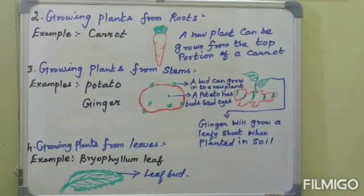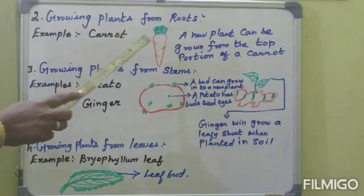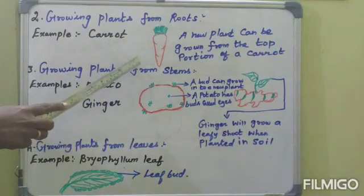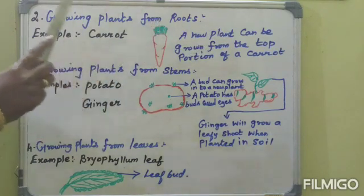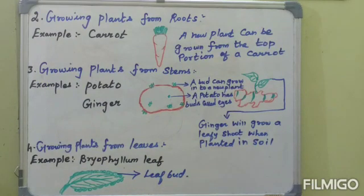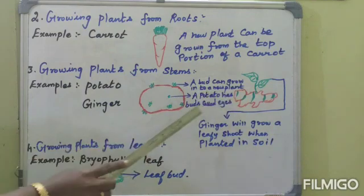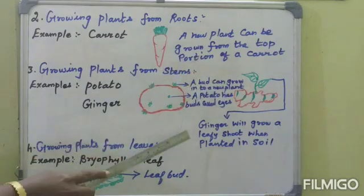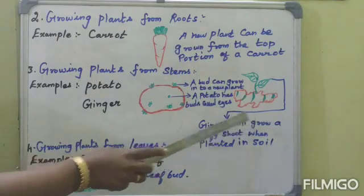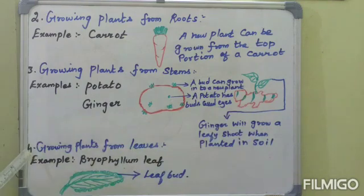Now we are going to learn how new plants grow from roots. Example: carrot. In carrot, the food is stored in the root. A new plant can be grown from the top portion of a carrot. Next, how new plants grow from stems. Examples: potato and ginger. A potato has buds called eyes, and a bud can grow into a new plant. Ginger will grow a leafy shoot when planted in soil.